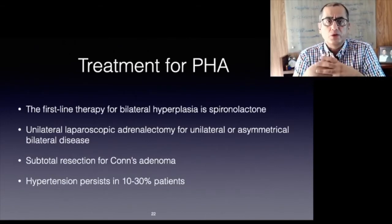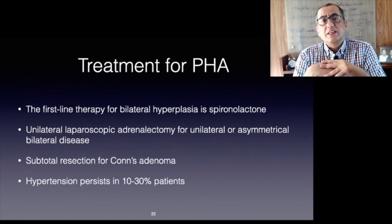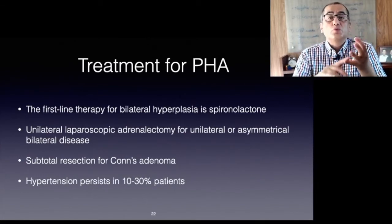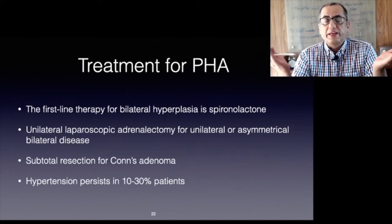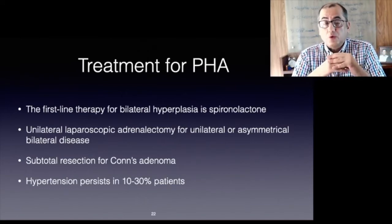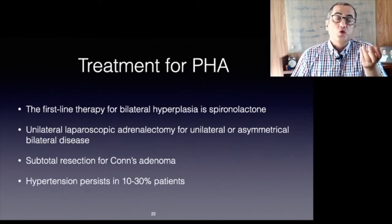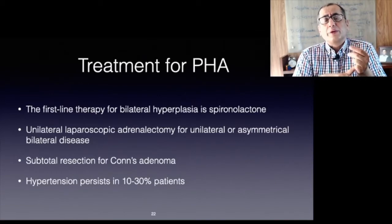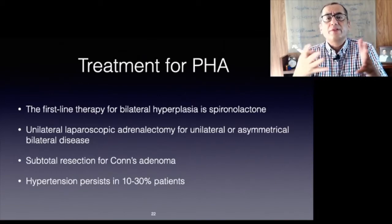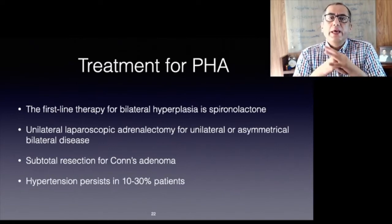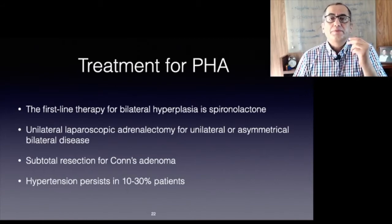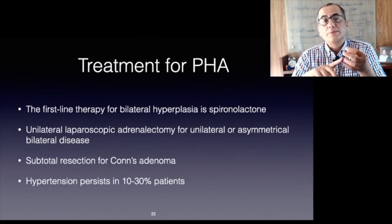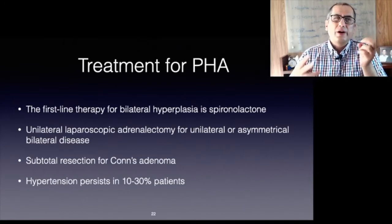If a patient responds very well to spironolactone, suspicion of PHA should be entertained. Unilateral laparoscopic adrenalectomy is effective in patients with clear evidence of unilateral or asymmetrical bilateral disease; subtotal resection is favored in typical Conn's adenoma. In 10 to 30 percent of patients who undergo adrenalectomy, hypertension persists despite adequate treatment, though at a lower level and requiring fewer drugs to control it.